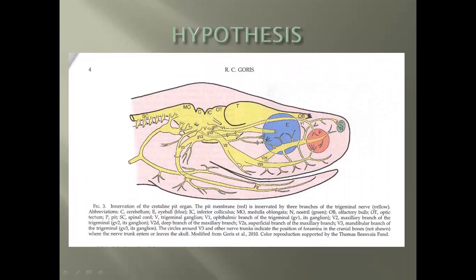We're going to take a brief anatomy lesson to look at how a snake's eye, pit, nose, and a few other structures work together. The red dot represents the pit — as shown in the pictures where arrows pointed to the structure between the eye and the nose — and the pit membrane is represented by the red circle. The blue circle represents the eyeball, the structure taking in visual stimuli and transmitting that information back to the brain.